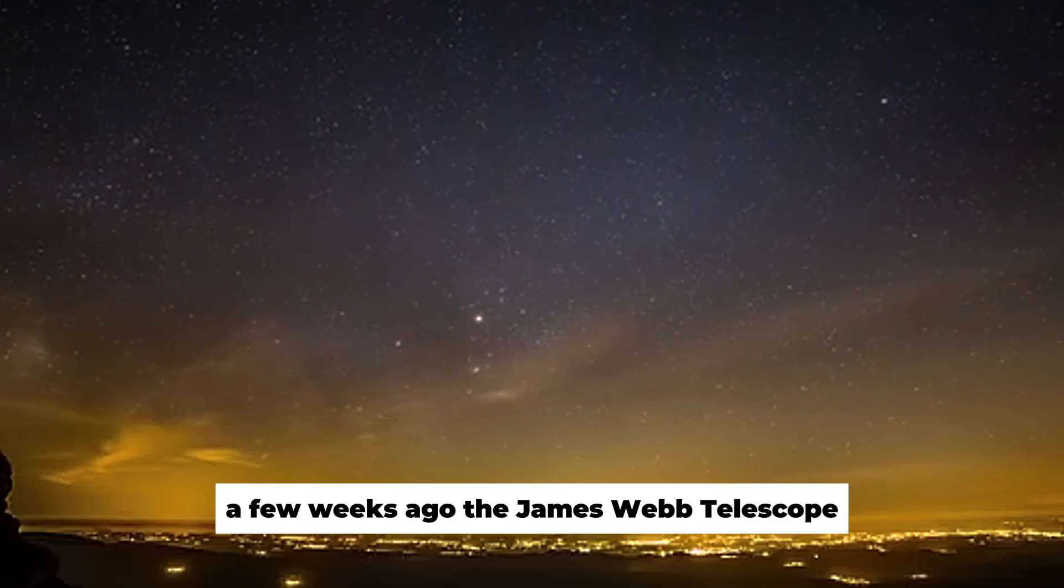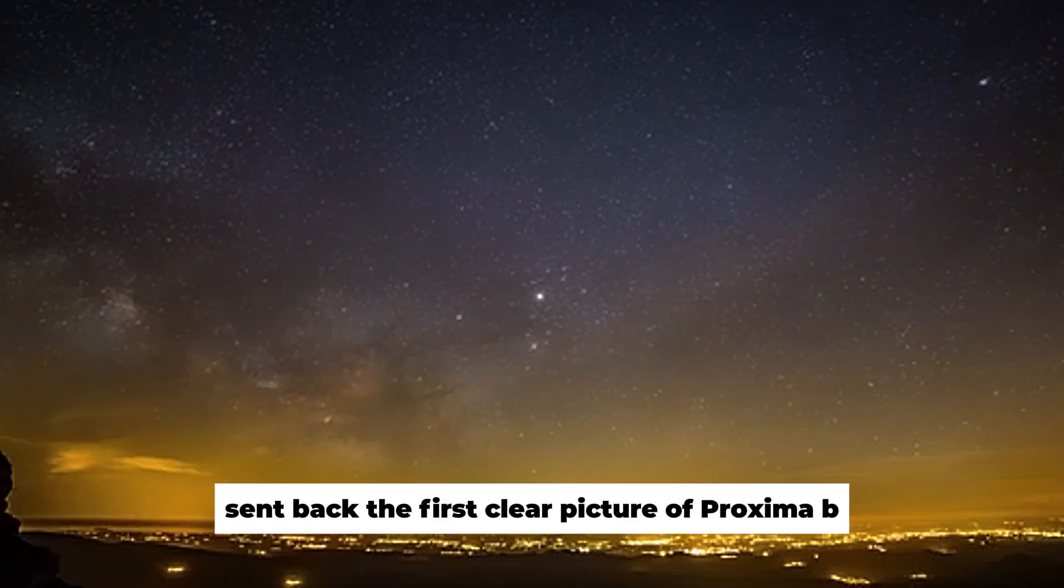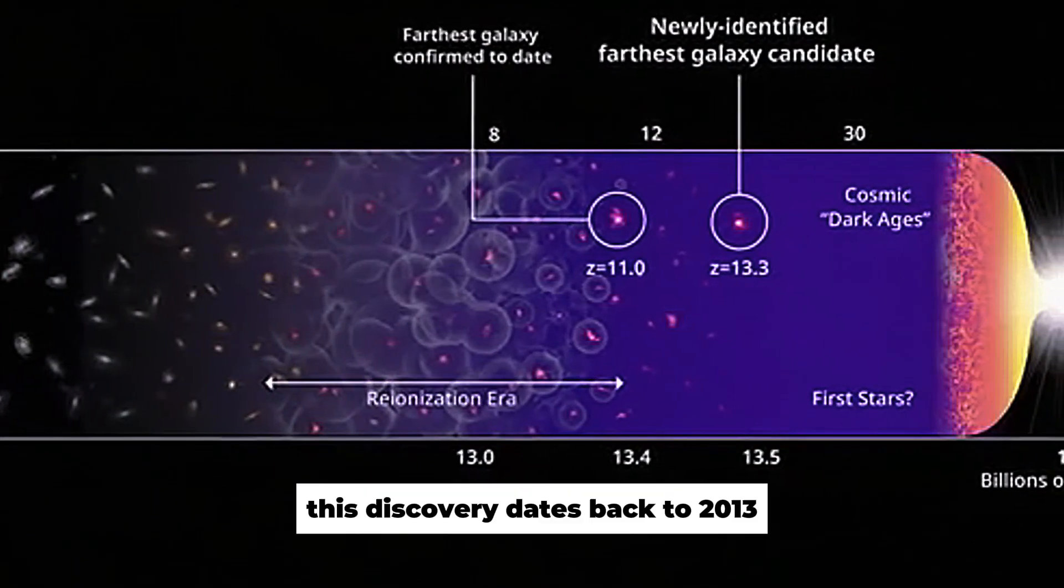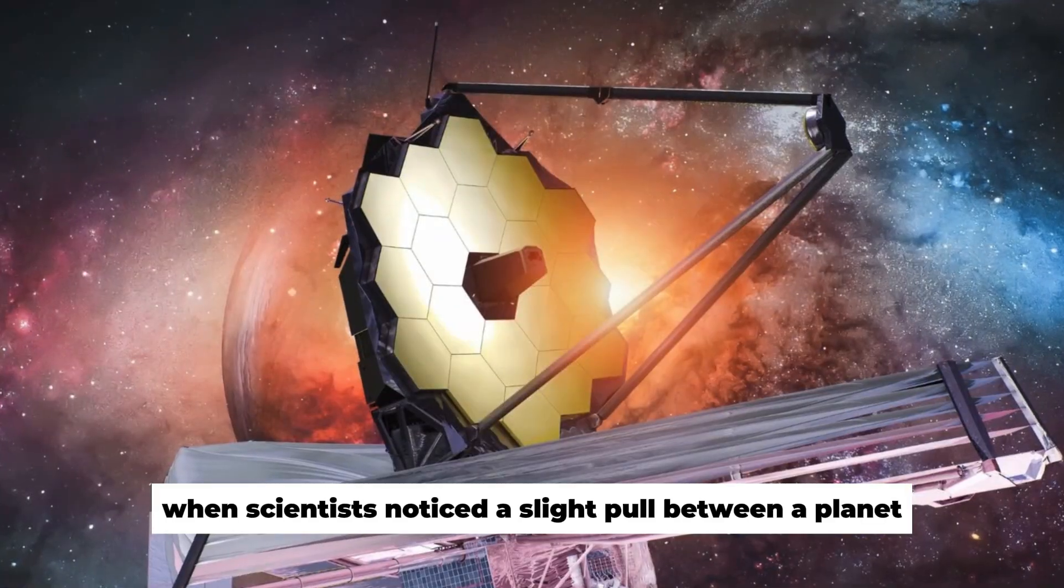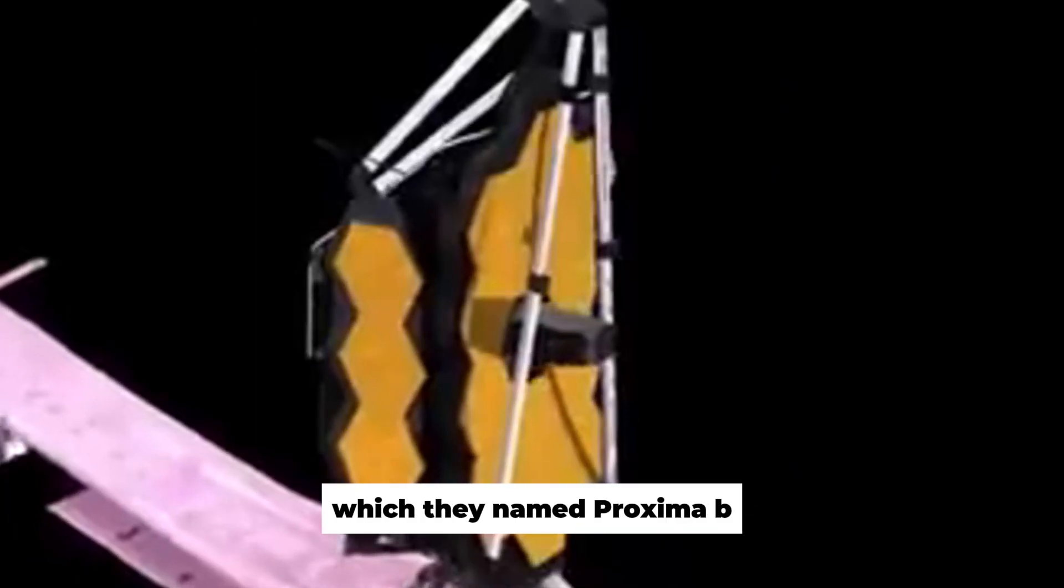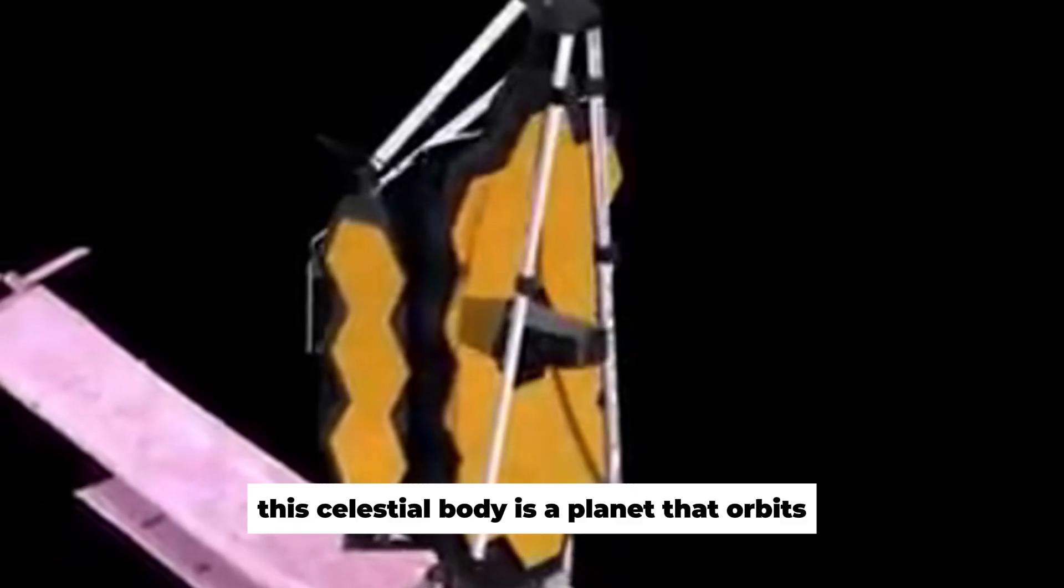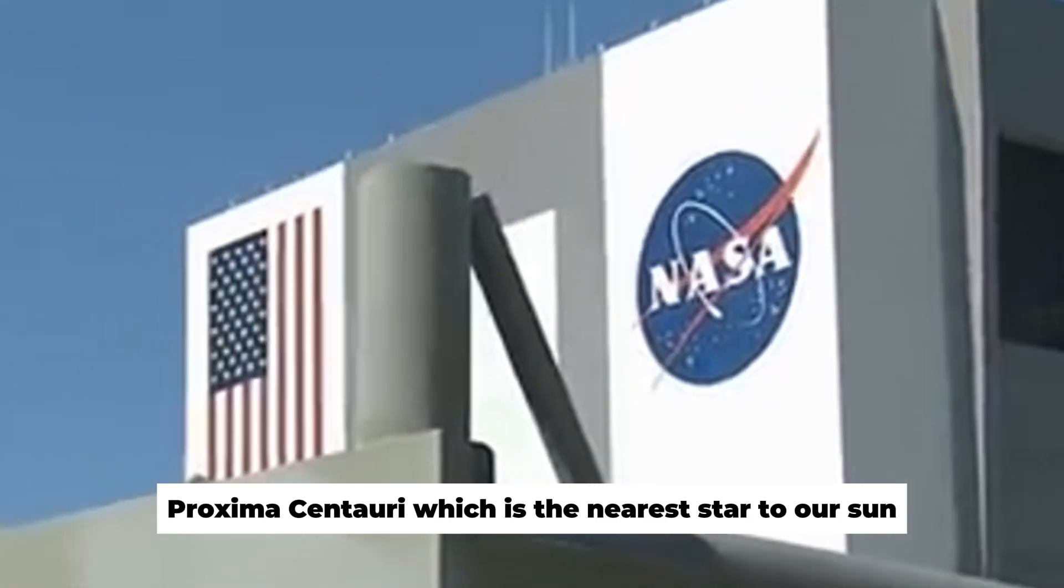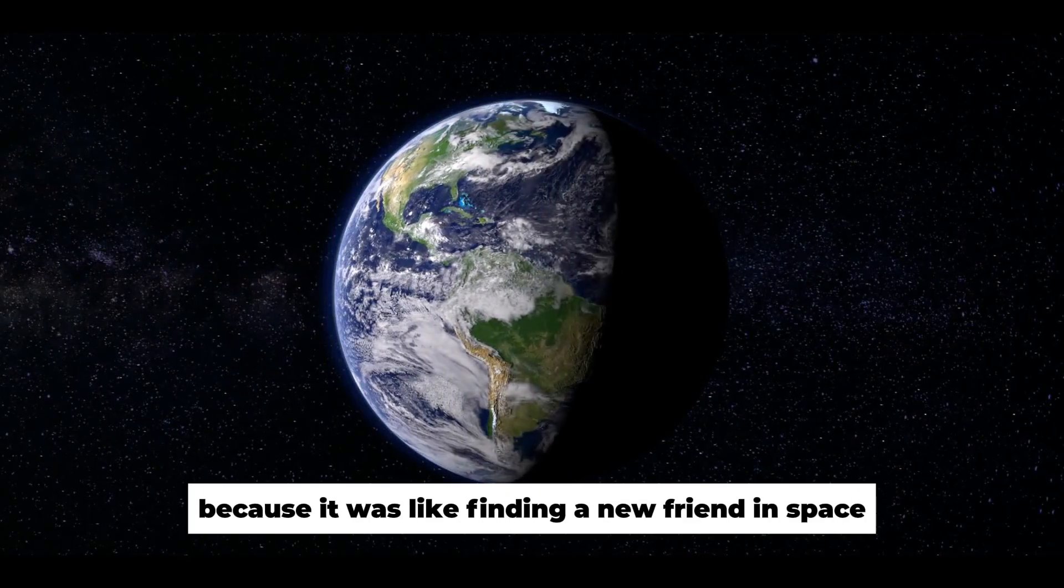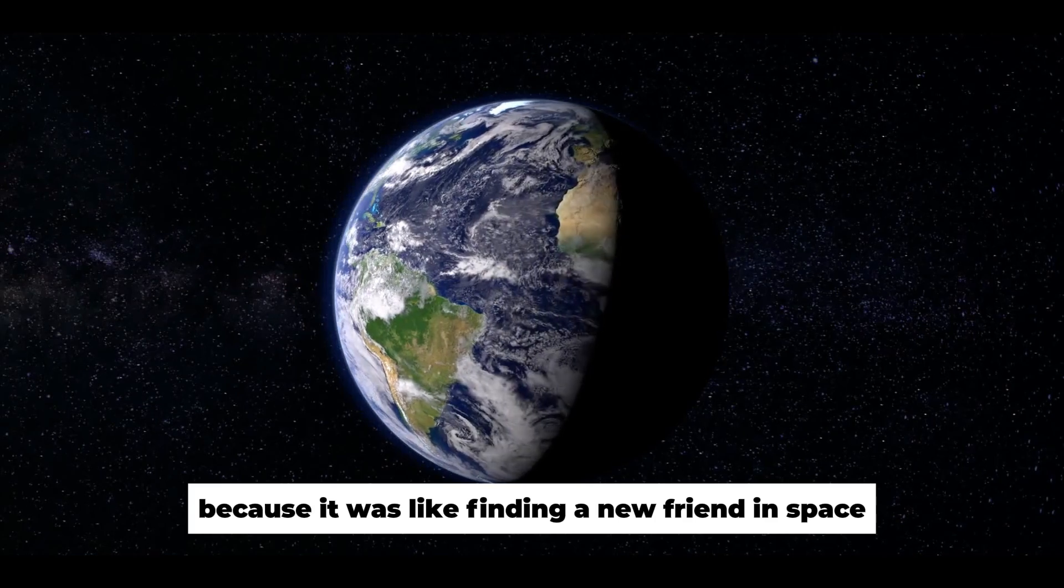A few weeks ago, the James Webb Telescope sent back the first clear picture of Proxima b. This discovery dates back to 2013, when scientists noticed a slight pull between a planet and its parent star, which they named Proxima b. This celestial body is a planet that orbits Proxima Centauri, which is the nearest star to our Sun. Researchers were very excited about this find, because it was like finding a new friend in space.